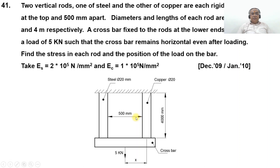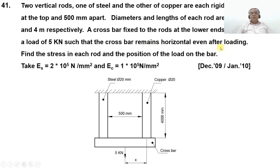The copper bar and steel bar are 500 mm apart. The steel rod has a diameter of 20 mm and length 4000 mm; the copper rod also has diameter 20 mm and the same length of 4000 mm. The cross bar carries 5 kN such that it remains horizontal. We need to find the stress in each rod and the position of the load, which we assume to be at distance x.